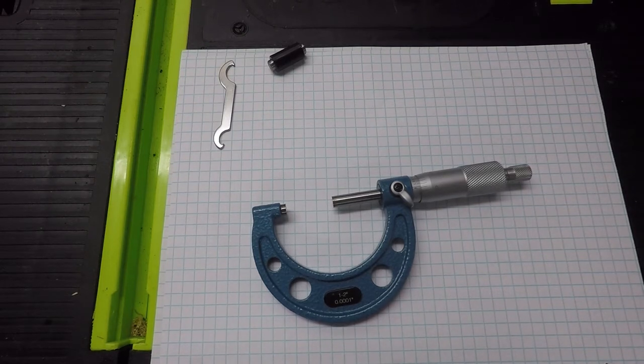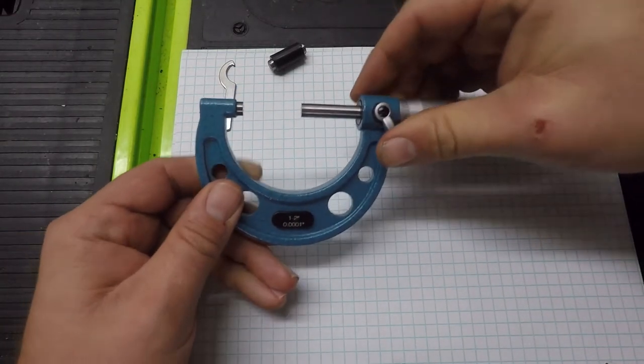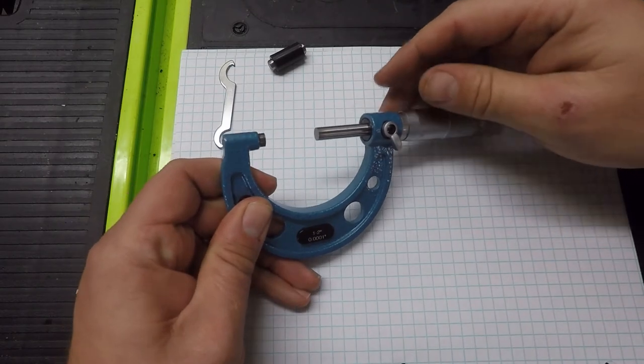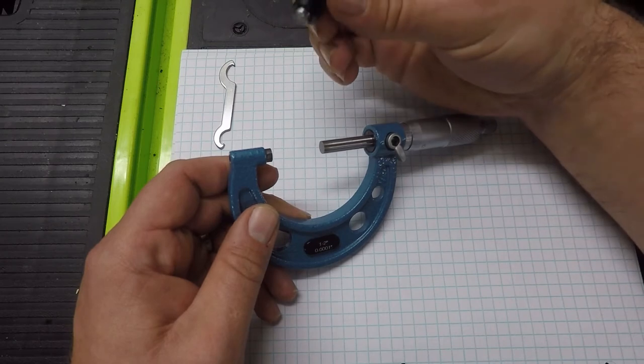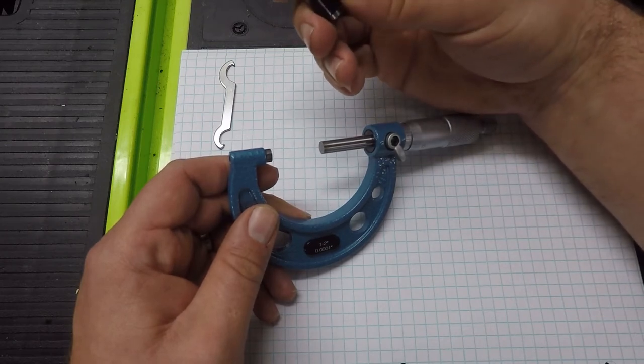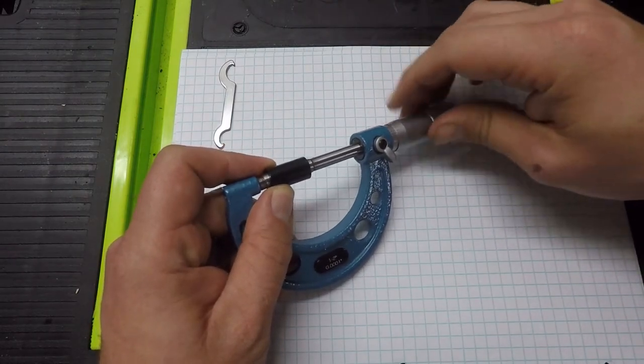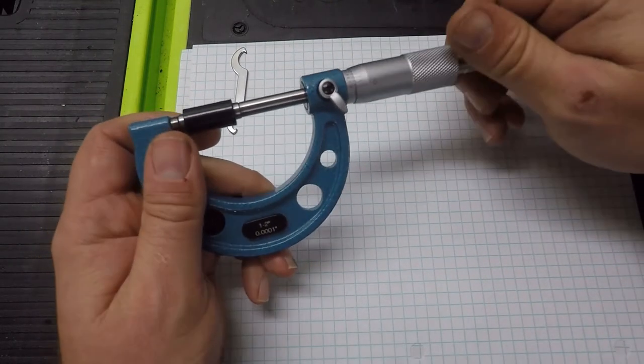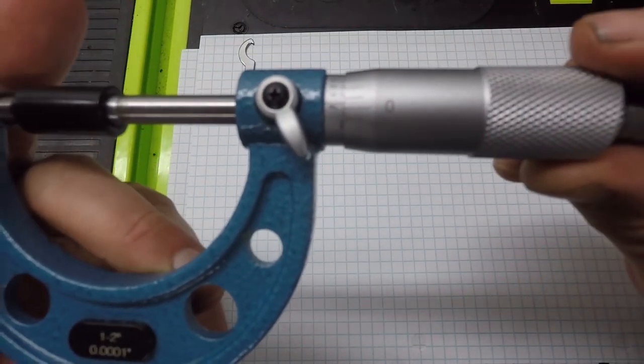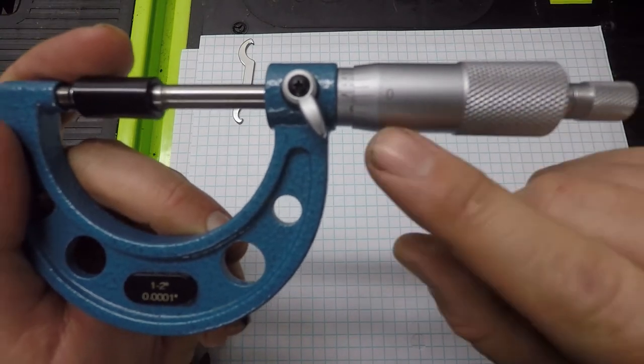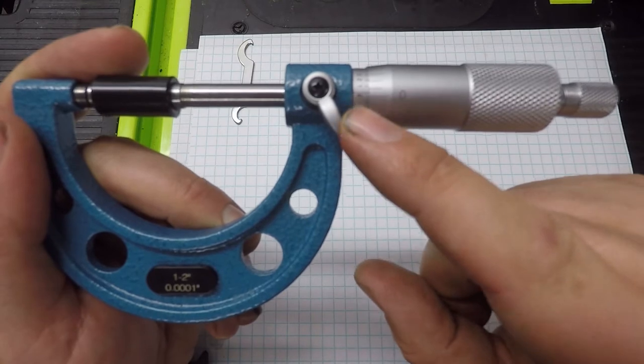All right, so first let's start off with calibration. This one here, this is a one to two inch model and the way we want to calibrate one like this is there is a piece that it comes with that is a calibrated one inch long metal rod that you can stick into the micrometer and then check to see whether or not we're exactly on one inch. And the way we want to verify that is we want to look and make sure that both zero marks, the one here on the thimble and the one on the sleeve are lined up.